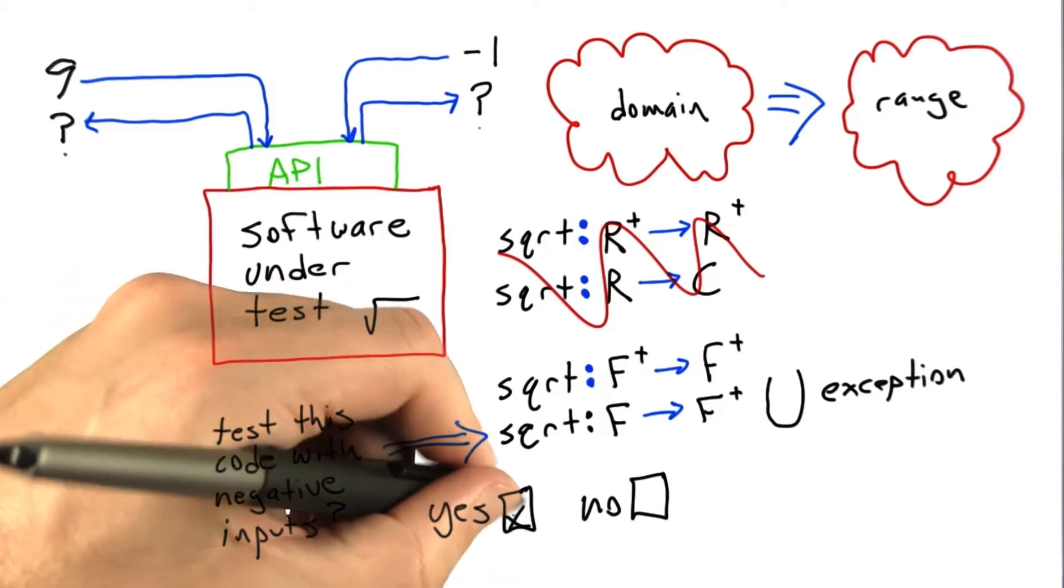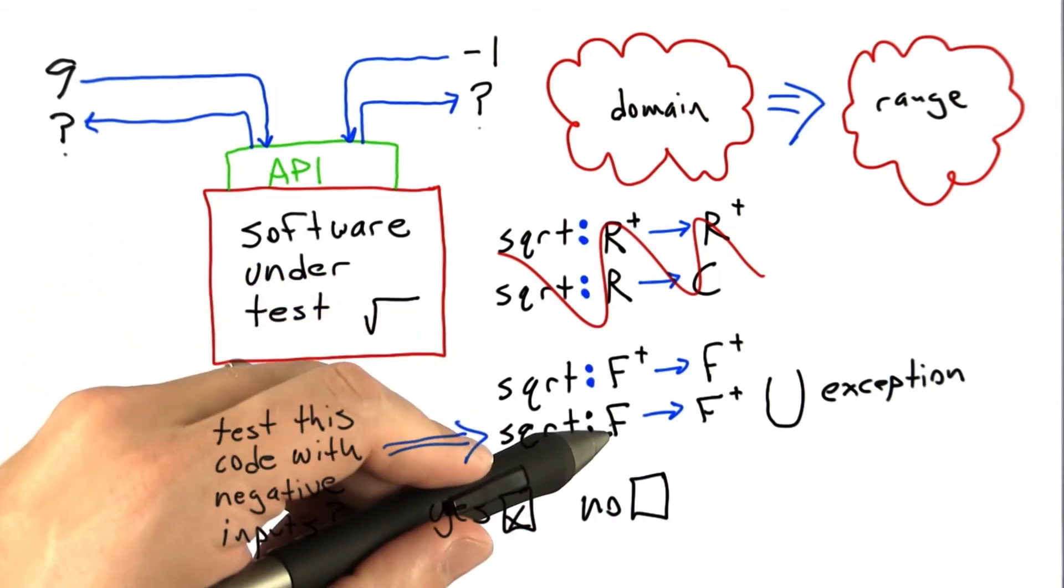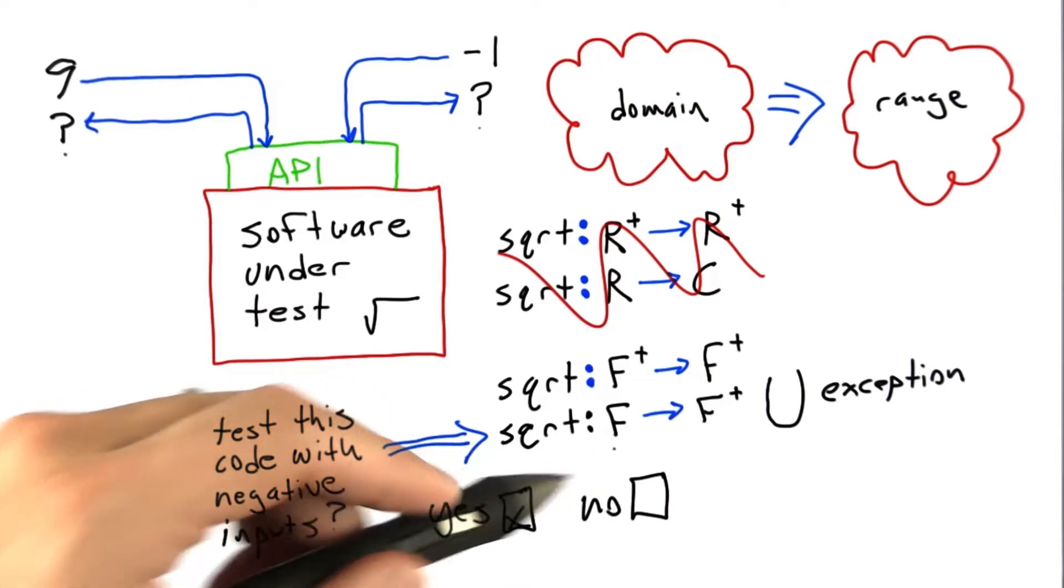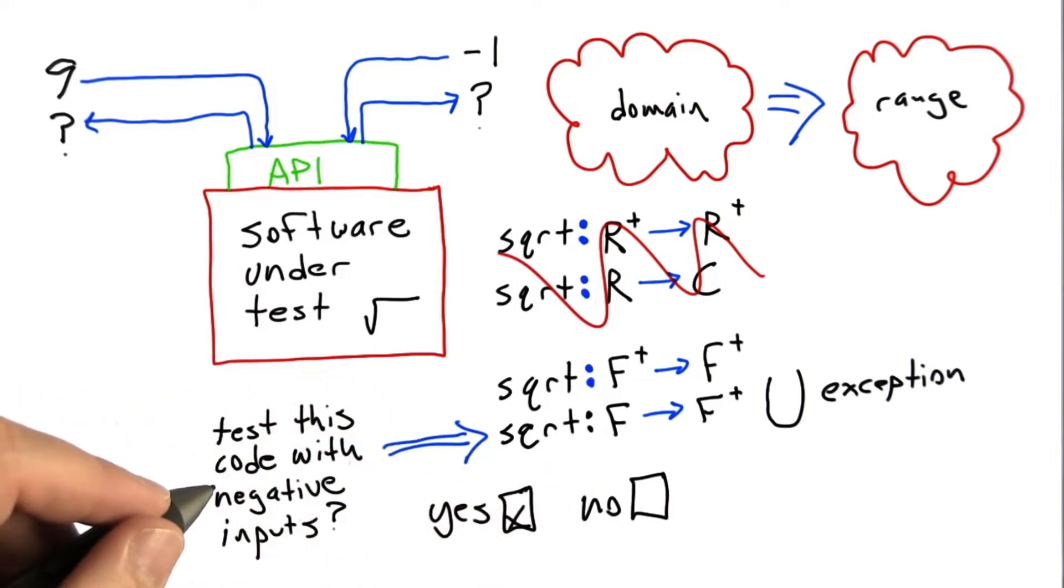The answer is that yes, we should test it with negative inputs. Negative inputs are part of the domain of the function, and one of the basic principles of testing is we should test computer programs with values sampled from their entire domain.